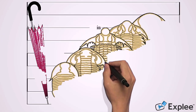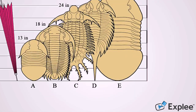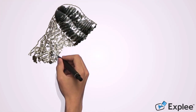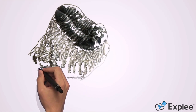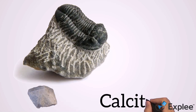Trilobites vary in size, with the smallest being 3 mm but can grow to upwards of 30 cm. However, the typical range is between 3–10 cm. Their hard exoskeletons are easily preserved in the fossil record and are often the first to be discovered. This is because their exoskeletons are rich in minerals, especially calcite.